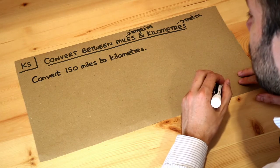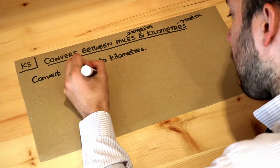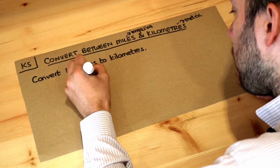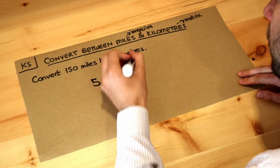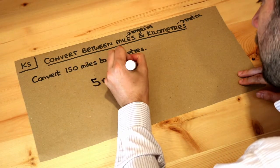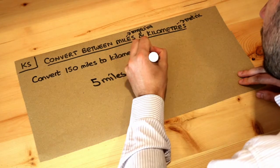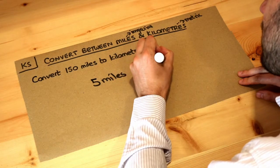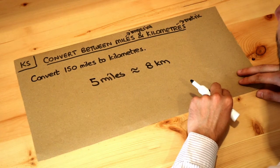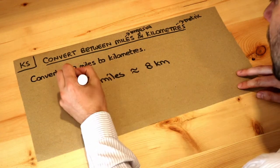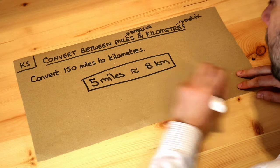The conversion for miles and kilometres is this: 5 miles is approximately equal to 8 kilometres — we can write this symbol for approximately equal to. That's not exactly true but it's roughly speaking true. So we're going to use this conversion.